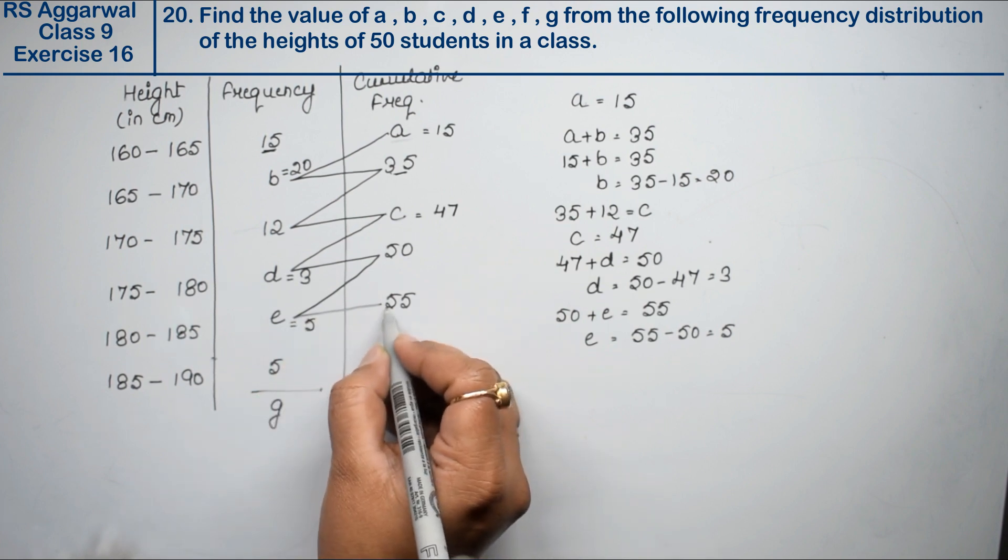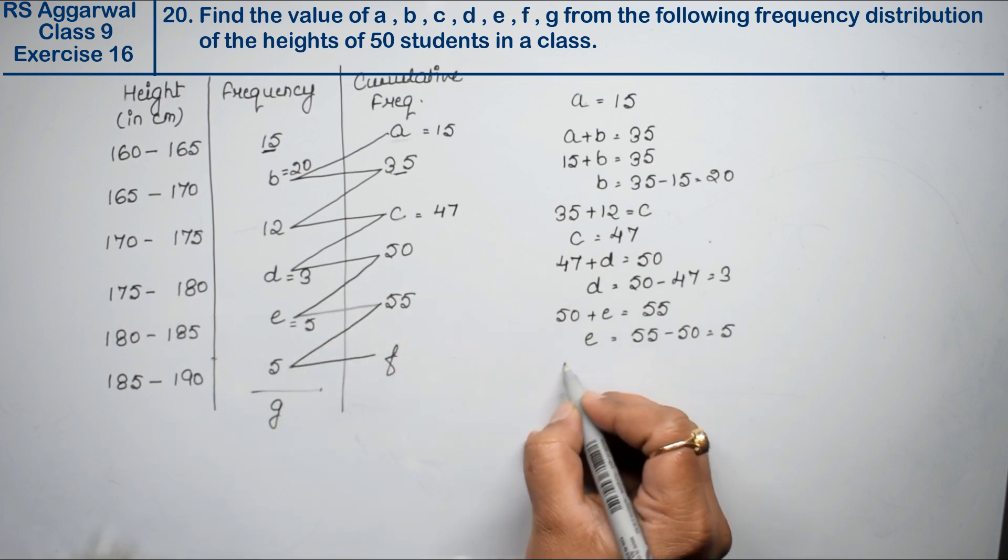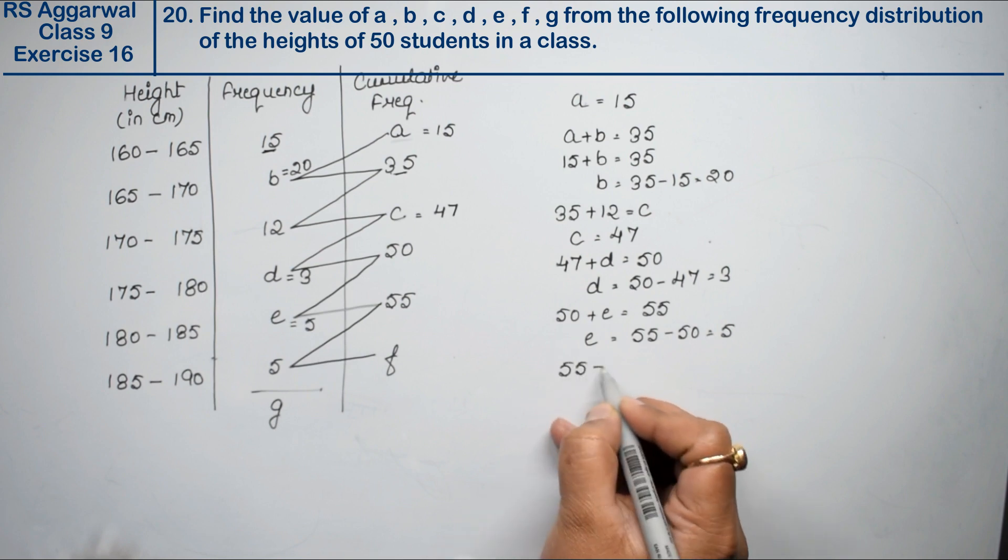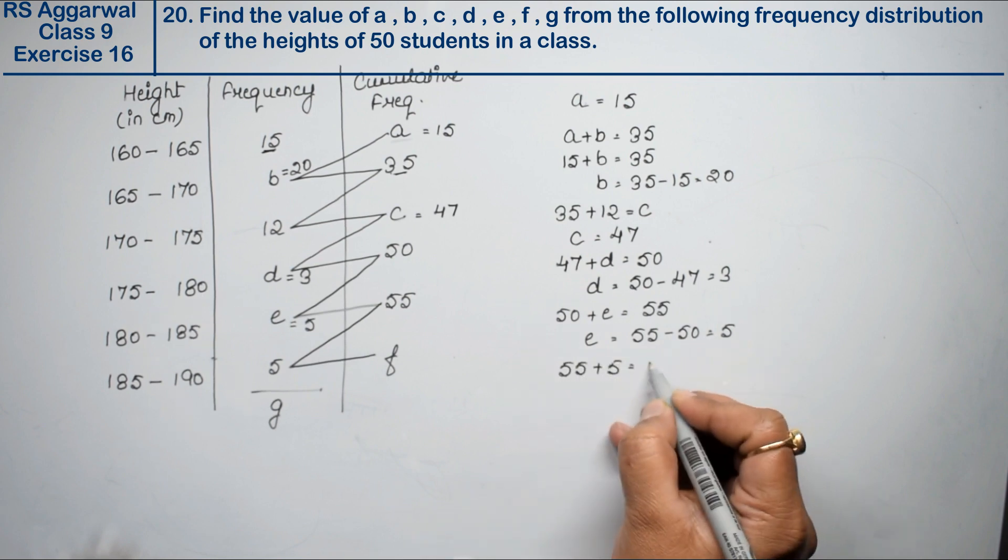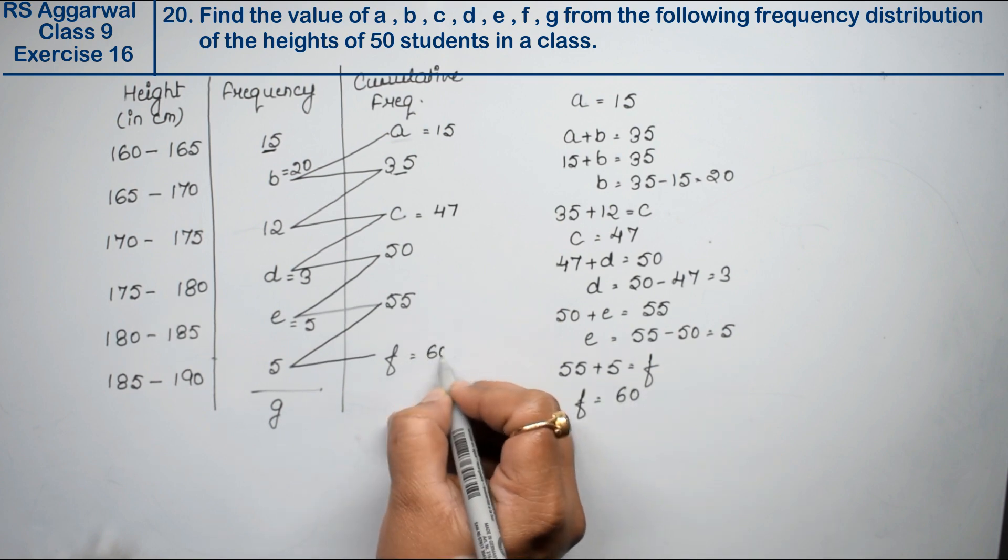Now, this plus E, add them. So 55 plus 5 equals to F. So F is how much? That is 60. F is 60. Right.